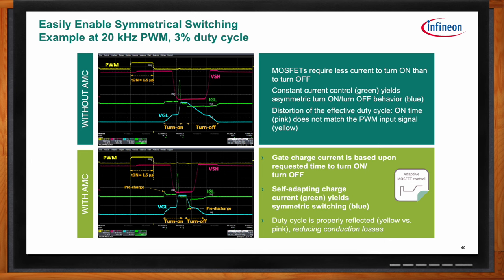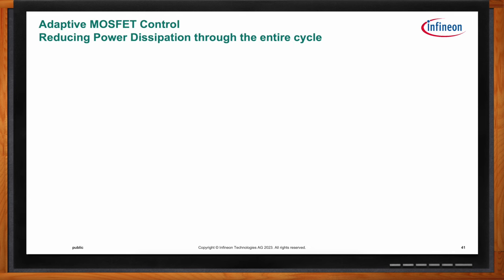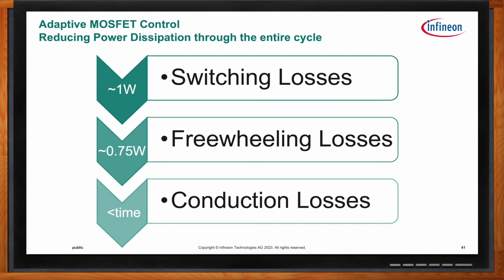To recap the ways adaptive MOSFET control reduces power dissipation: first, reduced switching losses — about one watt saved; second, reduced freewheeling losses by spending less time in passive freewheeling and more in active freewheeling — about three-quarters of a watt saved; and third, reduced conduction losses by reaching full MOSFET enhancement as fast as possible and ensuring symmetrical switching so MOSFET on-time reflects the input signal. All together, these can significantly reduce the power dissipation of your application.